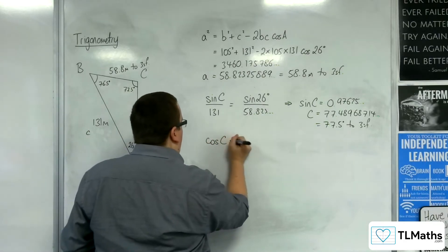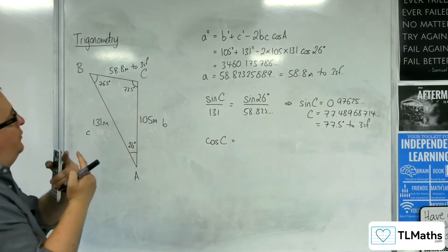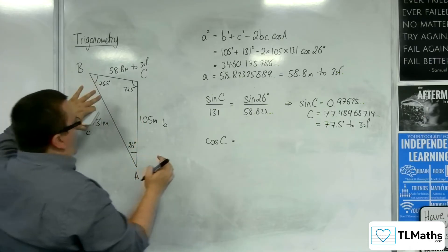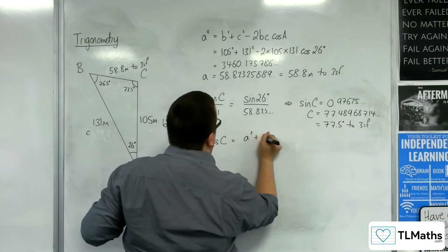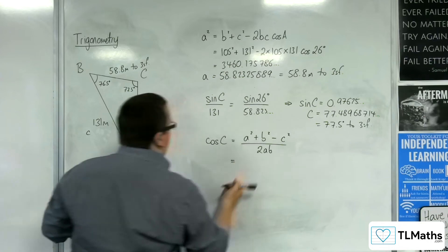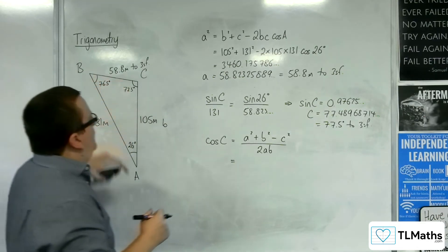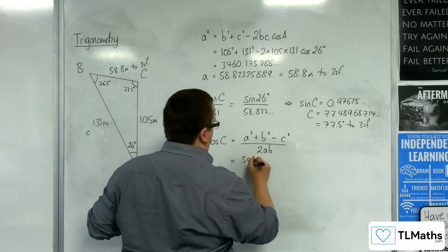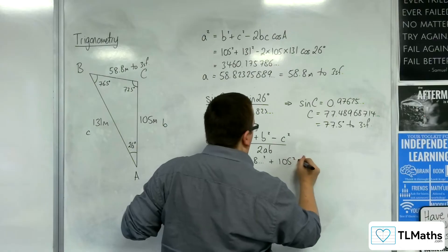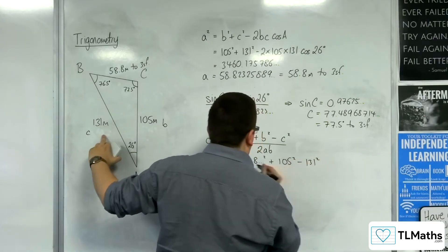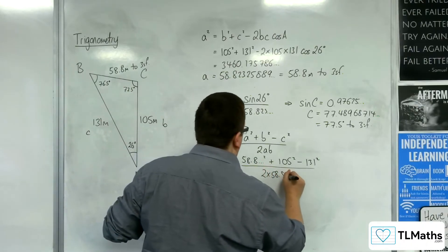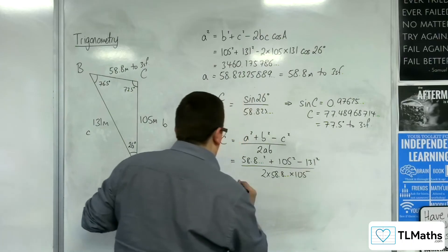Cosine of the angle c, so I've got to rearrange the cosine rule in my head, is going to be, what's that, a squared plus the b squared. So, let's write that down. a squared plus the b squared minus the c squared over 2ab. So, a squared is going to be the 58.8, etc., squared, plus the b squared, so 105 squared. Take away the 131 squared, divided by 2 times the 58.8 times the 105.